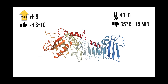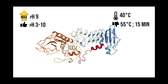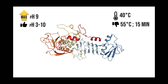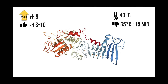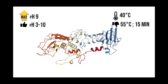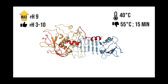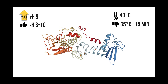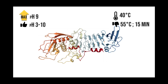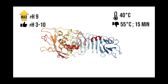Last but not least, the conditions required by serratiopeptidase to perform maximal activity are at pH 9 and at a temperature of 40 degrees Celsius. It is stable in a wide range of pH from pH 3 to pH 10, where it shows a stable secondary structure. Meanwhile, it is completely inactivated by heating at 55 degrees Celsius for 15 minutes.